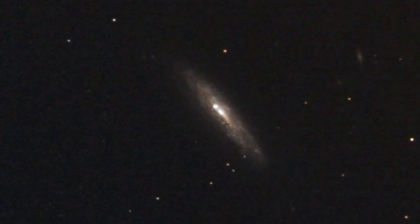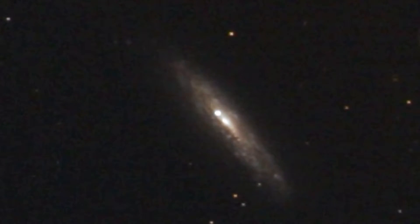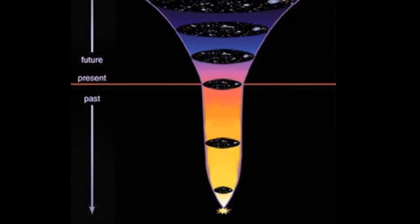Type 1A supernovae are among the most luminous explosive events known and are visible from halfway across the universe. However, even though they have been used to discover the accelerating universe, the nature of the progenitor system remains unknown.